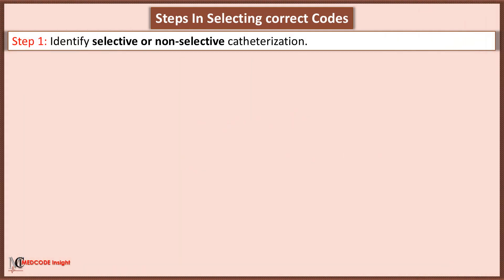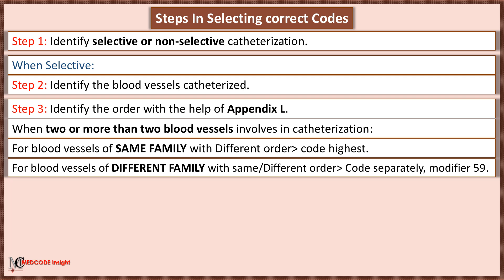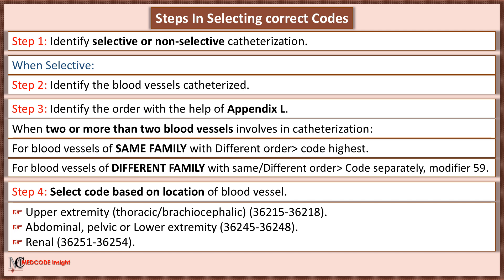In vascular catheterization coding, it is essential to follow specific steps to ensure accuracy when selecting the correct code. First, determine whether the catheterization is selective or non-selective. When the catheterization is selective, identify the blood vessels that were catheterized. Refer to Appendix L to identify the order. When two or more blood vessels are involved, for vessels of the same family with different orders, code the highest. For blood vessels of different families, regardless of whether the order is same or different, code separately and use modifier 59.